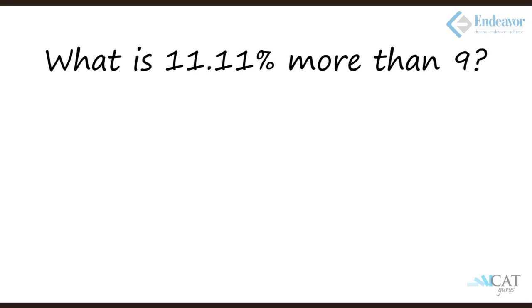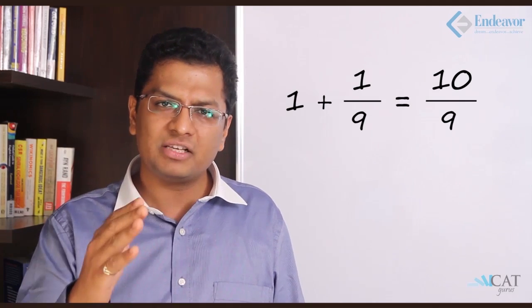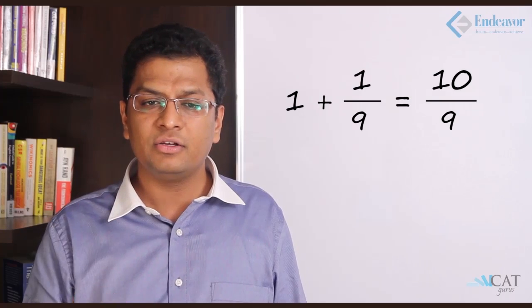Let us look at another one. What is 11.11% more than 9? 1 upon 9 was 11.11%. So 11.11% more means that itself and 11.11% more. So if I say 9 plus 11.11% of 9, can I simplify it? Take 9 outside and say 1 plus 11.11%. Let us write in terms of ratios: 1 plus 1 upon 9 gives us 10 upon 9. So 10 upon 9 into 9 will give us 10.